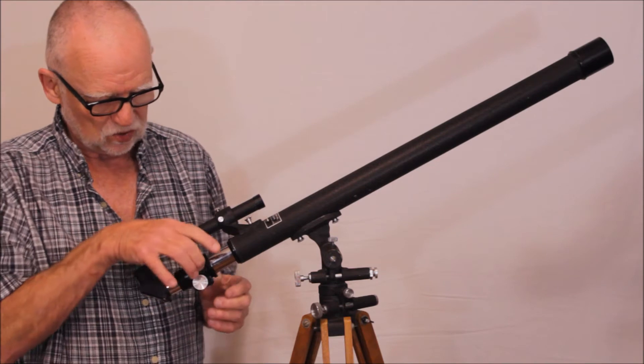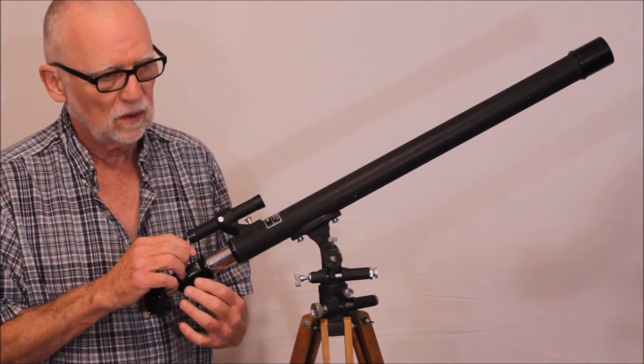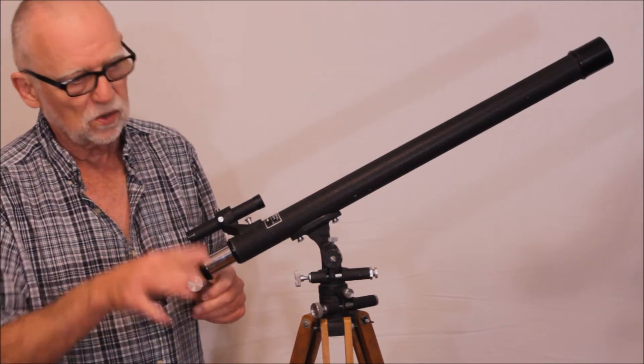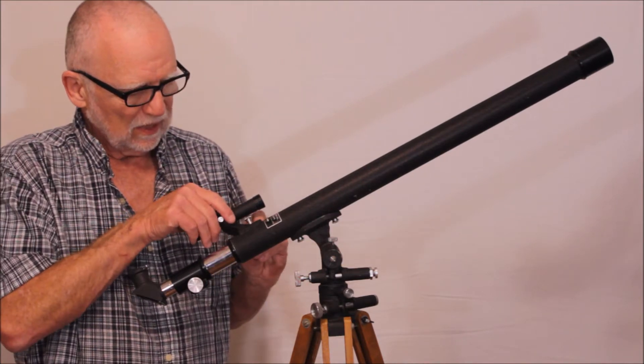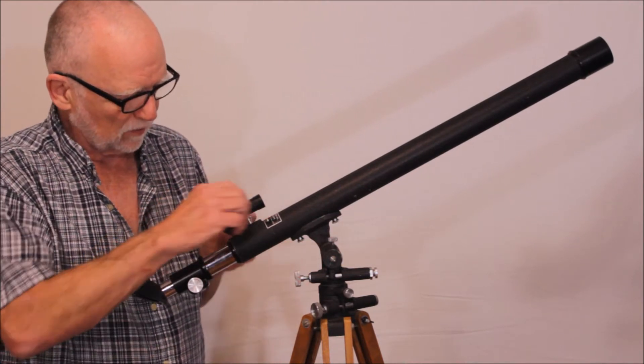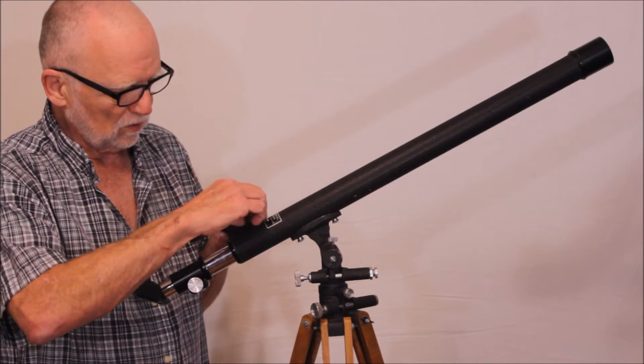The SPI has two focuser knobs. Unlike the Unitron, who are cheap and only have one. It has a detachable finder here. Cute little finder. Cute as can be. Detaches.